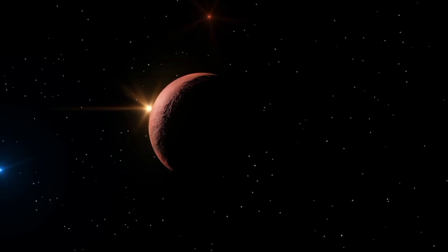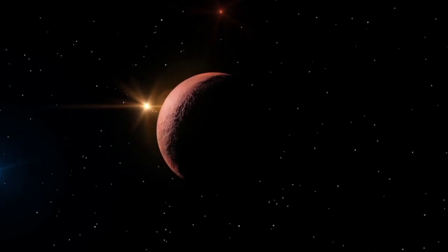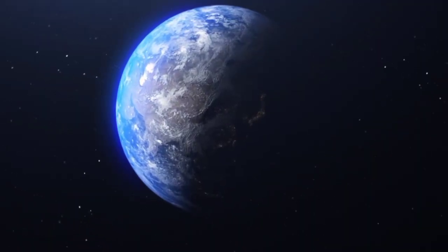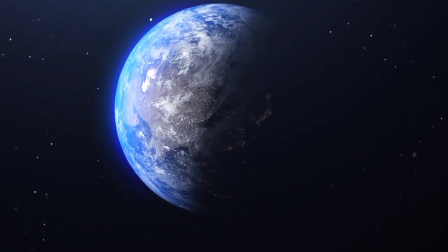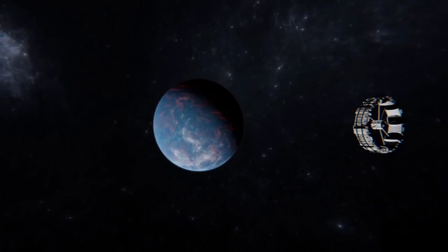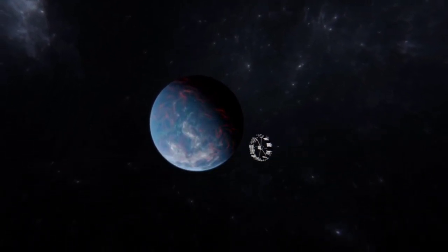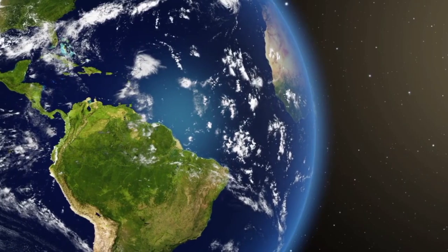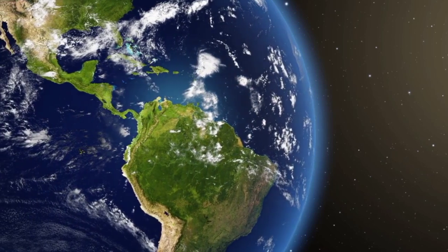The three-body problem in space involves understanding how three objects, such as Pluto, Neptune, and the Sun, interact gravitationally. It's like predicting where these objects will move based on their initial positions and mutual gravitational pull. In Pluto's case, this problem illustrates how its orbit, Neptune's orbit, and the Sun's gravity collectively work in a complex but harmonious way.